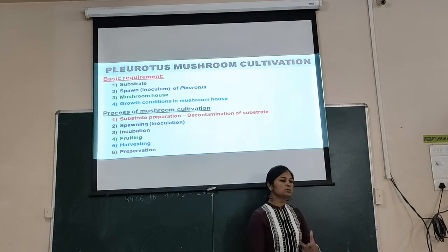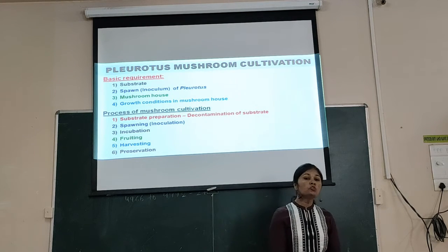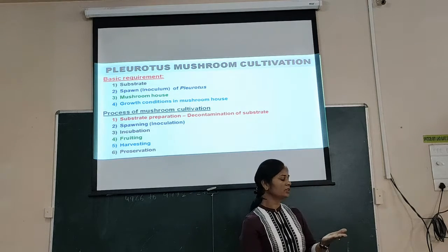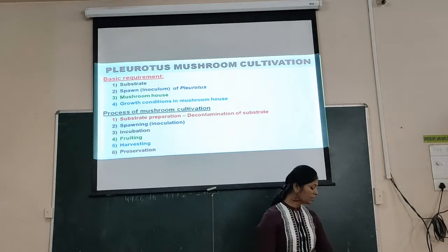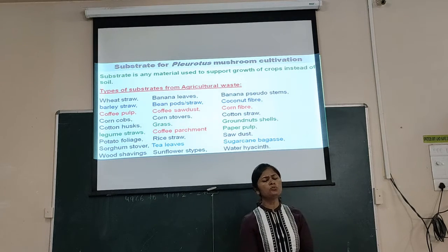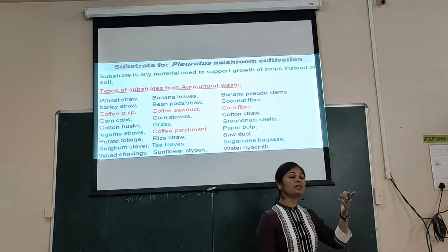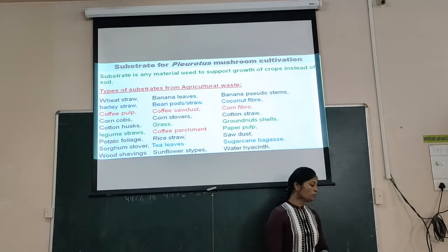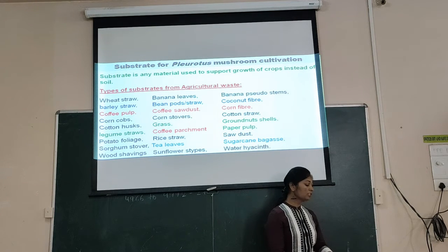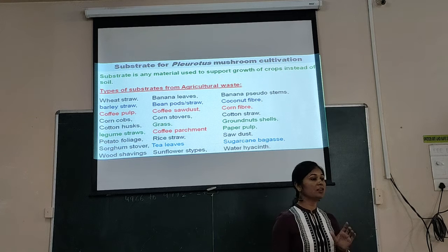For mushroom cultivation, the basic requirements are: substrate, spawn, and proper growth conditions. A substrate is the material on which the mushroom grows — mushroom cannot grow independently. As a substrate, we can use any dead organic matter from plants, such as corn stalks, cotton stalks, sorghum straw, bean stalks, cornstover, grass, coffee husks, wheat straw, or rice straw.